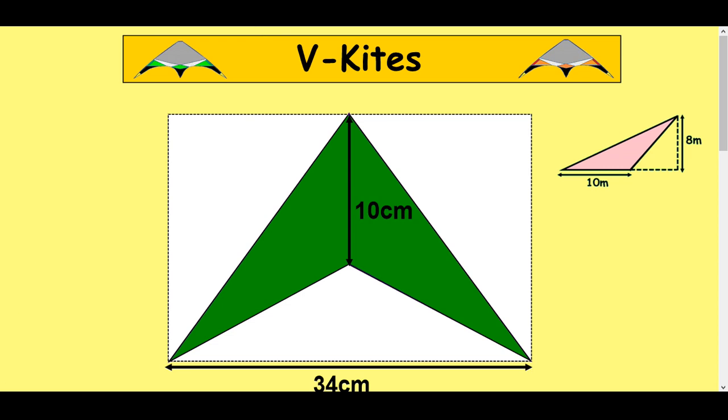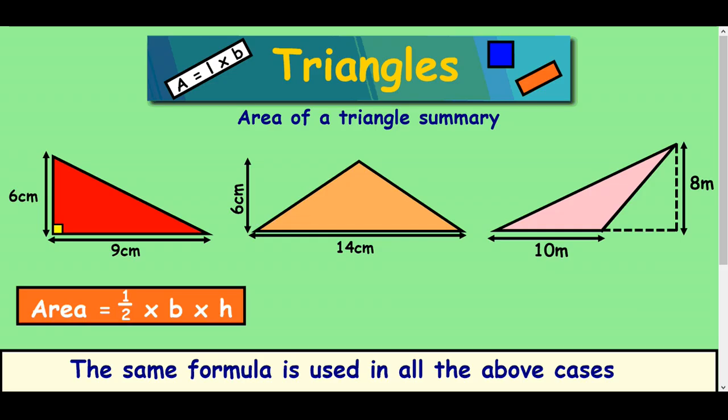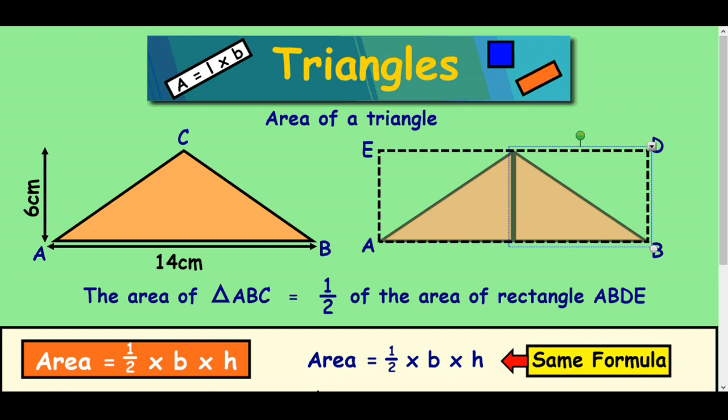Now before we go on to working out the area of this inverted kite I'm just going to have to do a bit of triangle work so bear with this and then we'll get back to the kite. So instead of just working out the area of a right angle triangle there's a couple of other triangles you can work out using the area formula which is this one here when you've got the base and the height.